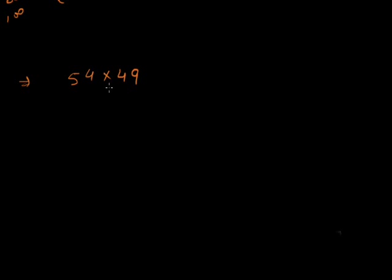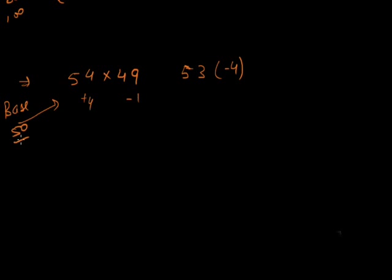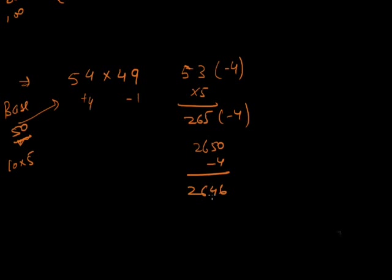You can put comments on the video if you have doubts. Students are often confused by a problem like 54 times 49. Using base 50: 54 is plus 4 from 50 and 49 is minus 1 from 50. Plus 4 times minus 1 is minus 4. Then 54 minus 1 (or 49 plus 4) is 53. Since base is 50 (which is 10 times 5), multiply 53 by 5 to get 265. Then 265 minus 4 is 2646.